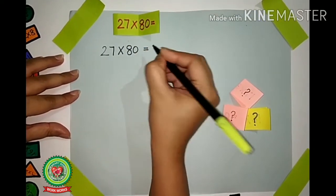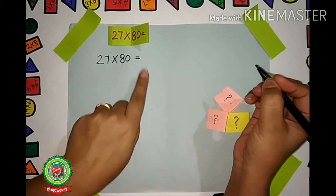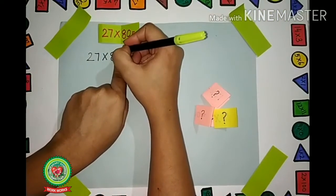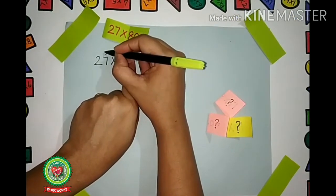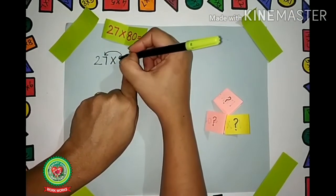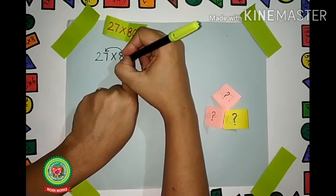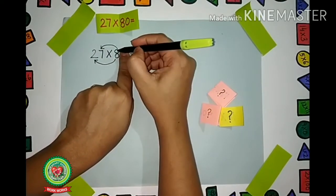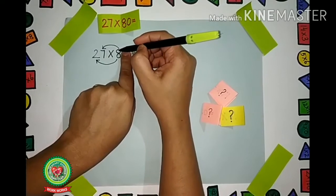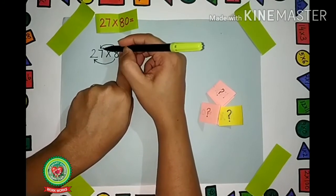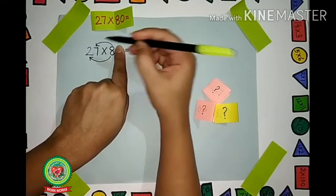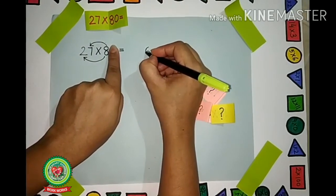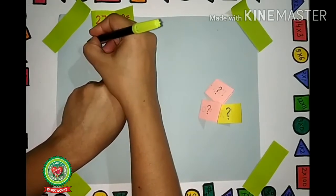Same rule applies here. Hide the 0 with your finger. We will multiply 8 with the first digit from the right hand side, then 8 with the next digit. What is 8 × 7? Read the table of 8 till 7. 8 × 7 are 56. Write 6 over here and 5 carry.